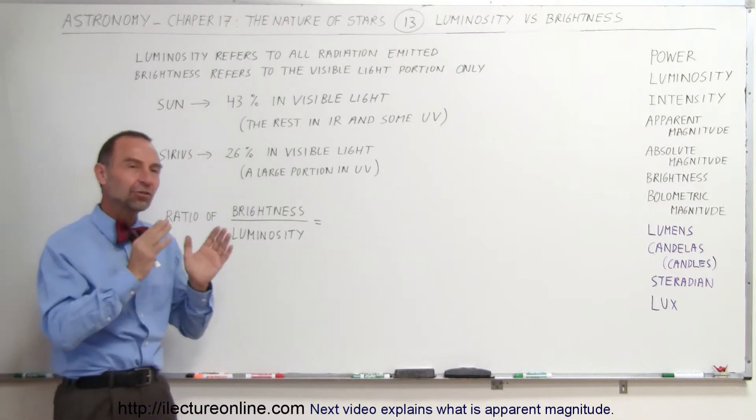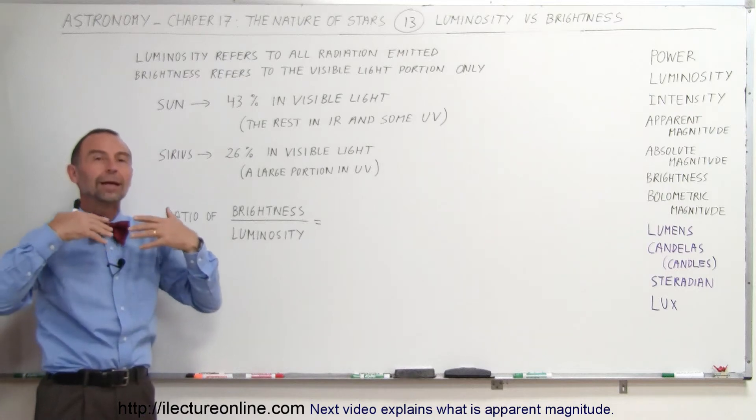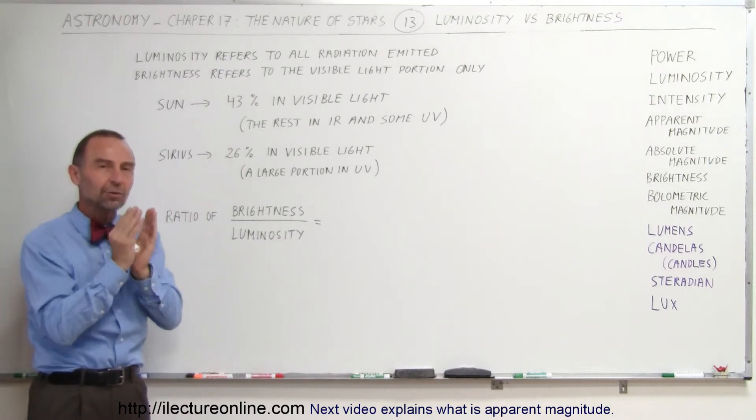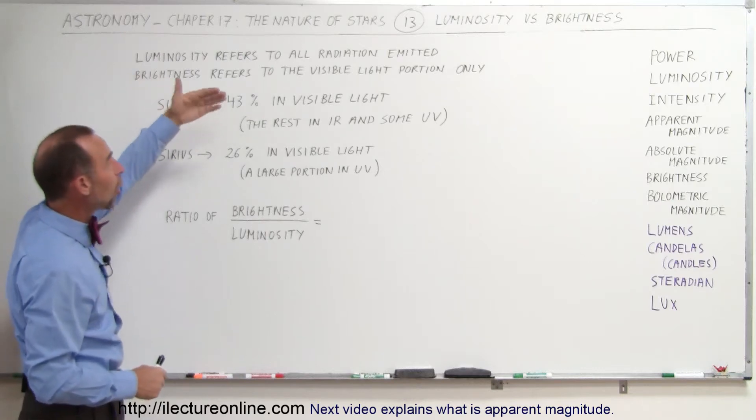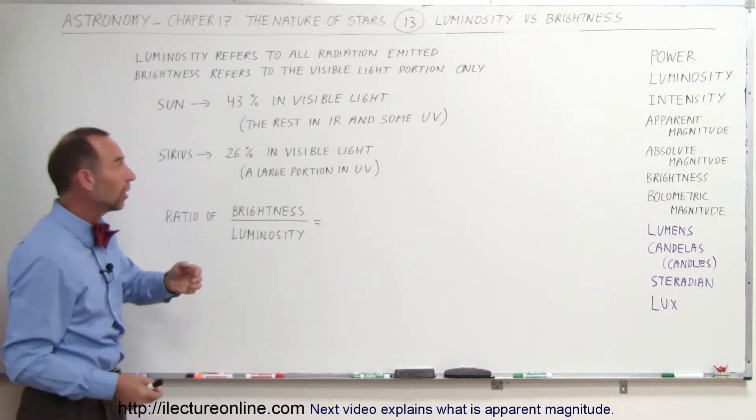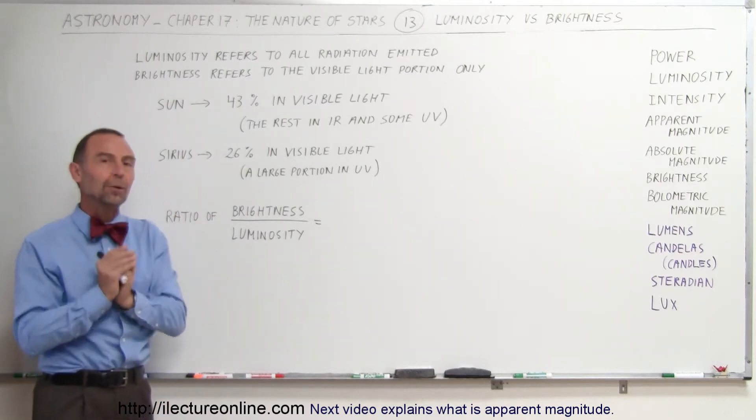So let's say the official definition of brightness is in terms of what percentage of the total energy radiated from the object comes from the visible light. For example, we can say that the luminosity refers to all the radiation emitted by an object like the Sun or a star, and the brightness refers to the visible light portion only of that radiation.